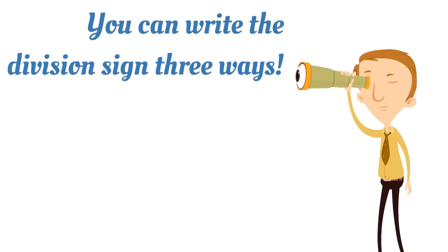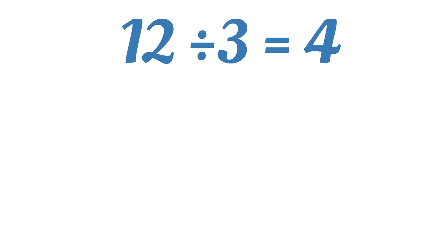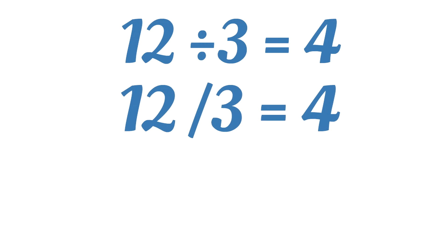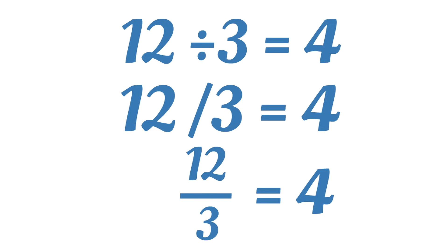The second fact is this: you can write the division sign three ways — not just with the traditional division sign. You can write it like the division sign, or you can write a division problem with a slash, or with a horizontal line. For example: 12 divided by 3 equals 4 — that's the original division sign. The same equation written with a slash: 12/3 equals 4. The division sign can also be a horizontal line: 12 over 3 equals 4. That looks like a fraction — and the line in a fraction means 'divided by.'